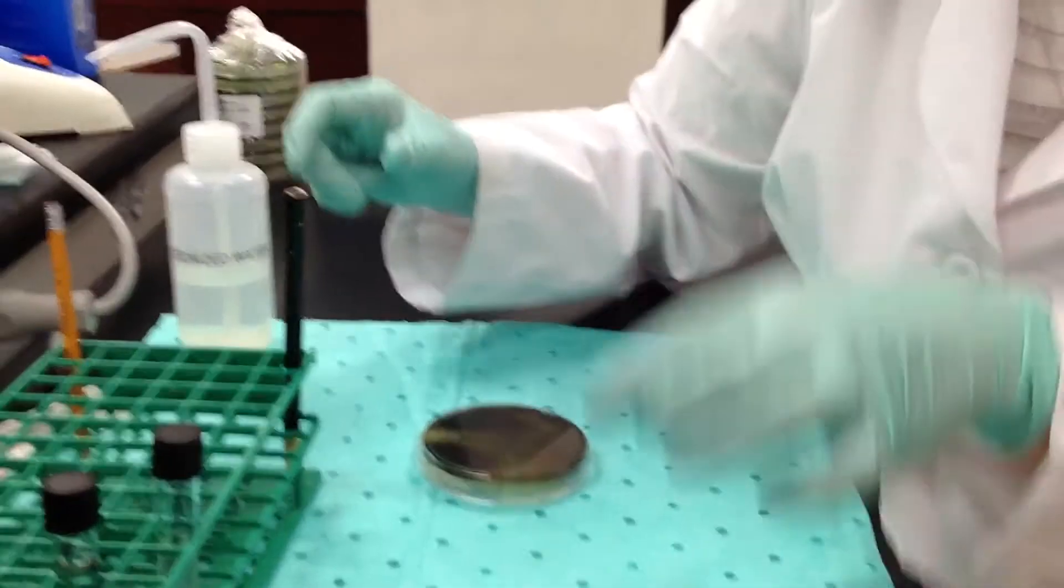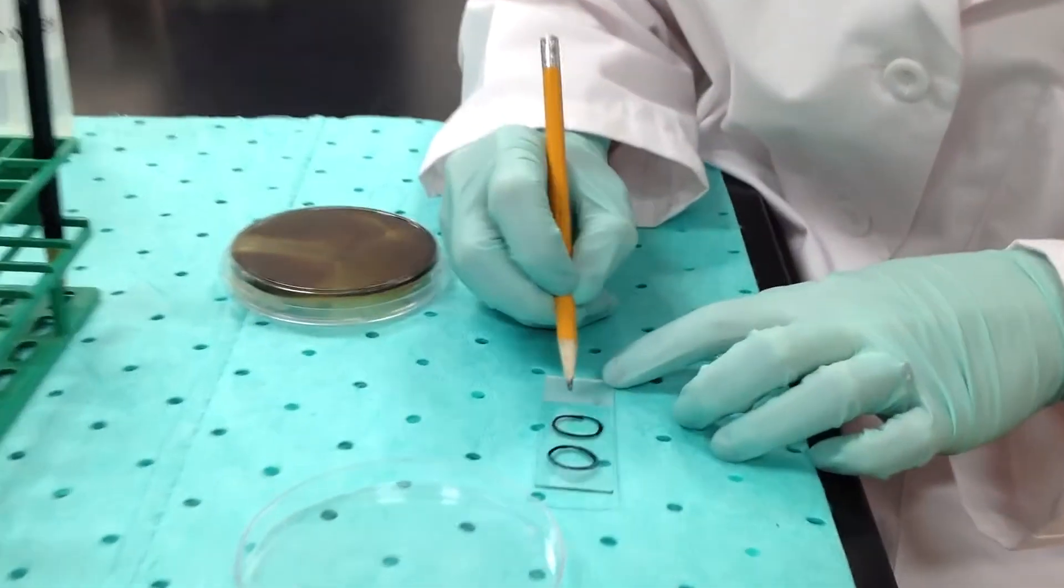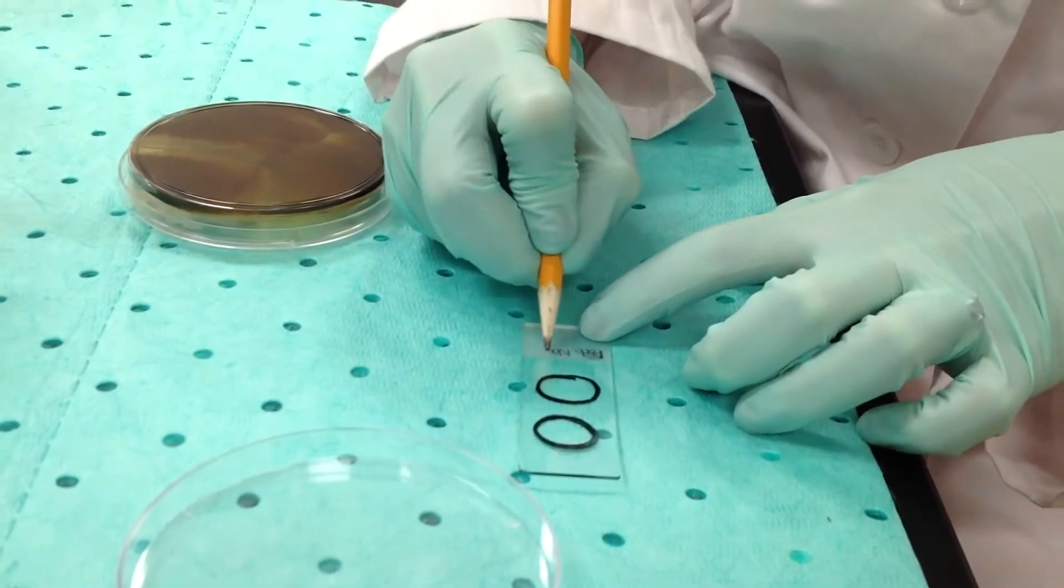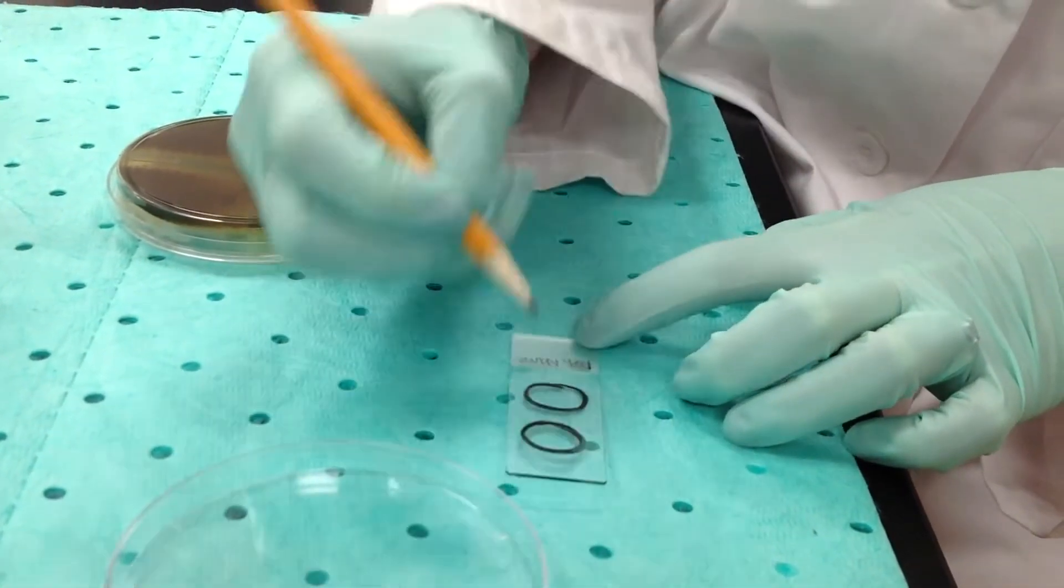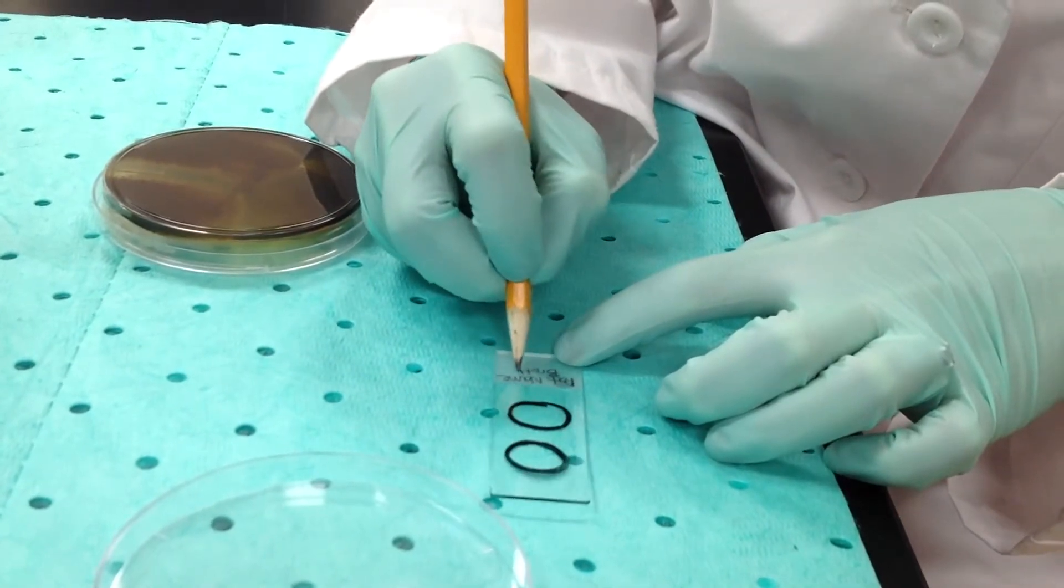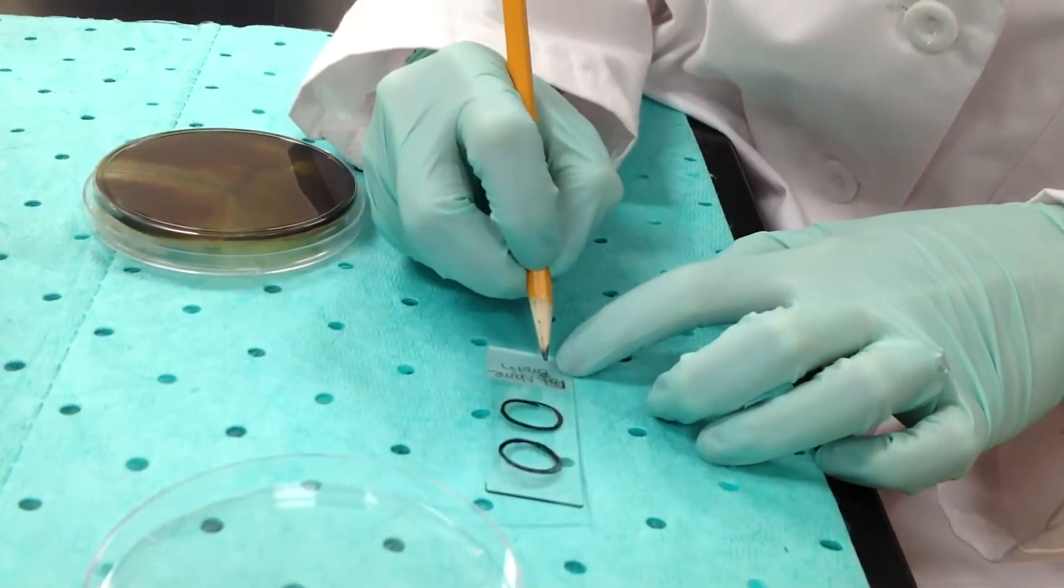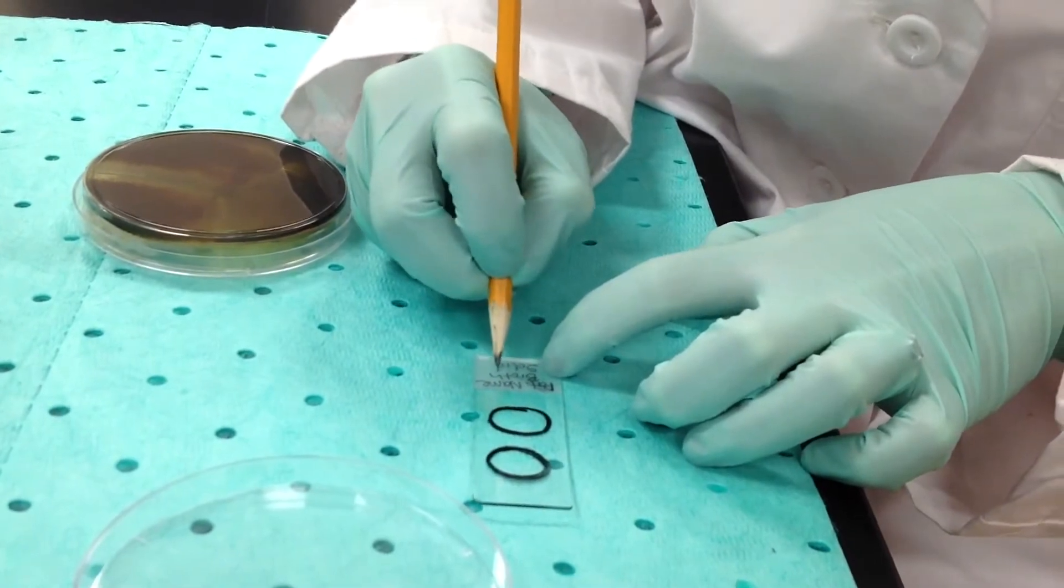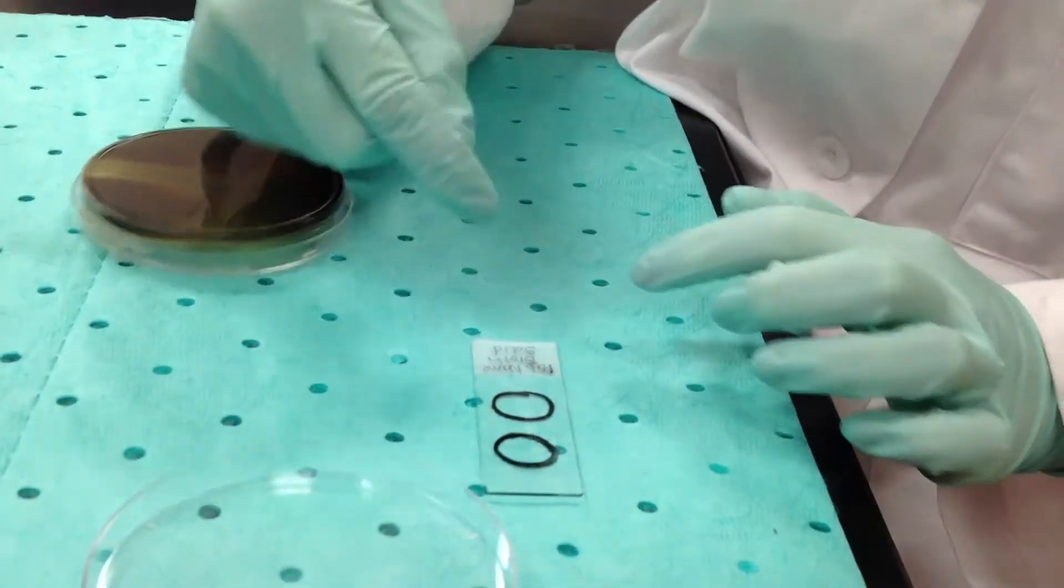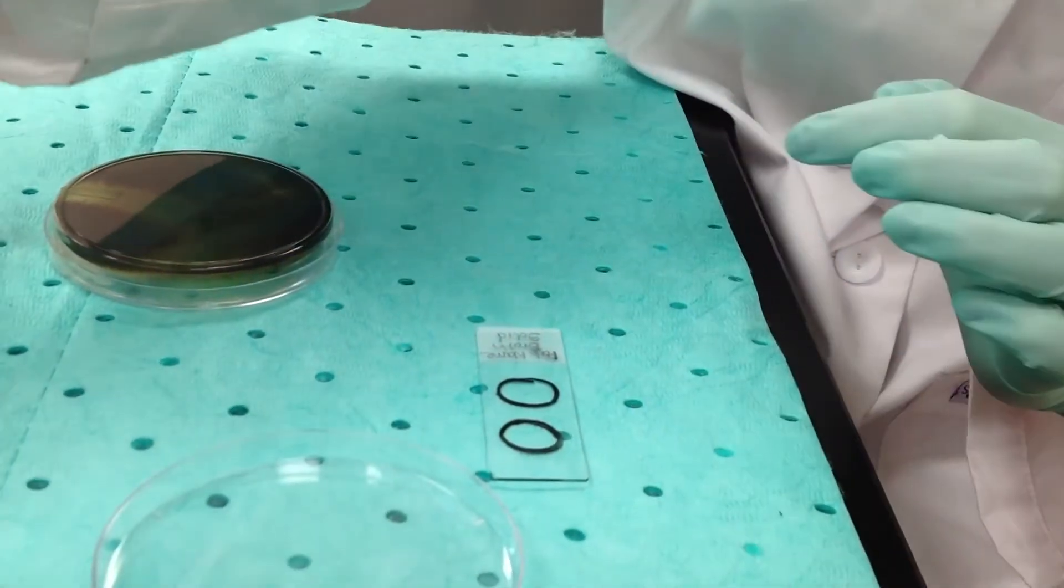On the reverse side I'm going to label with my patient name and what is on the slide. In my top circle I'm going to put a broth. On my bottom circle I'm going to put an organism from my solid plate. Your labels may change just depending on what you're working with.